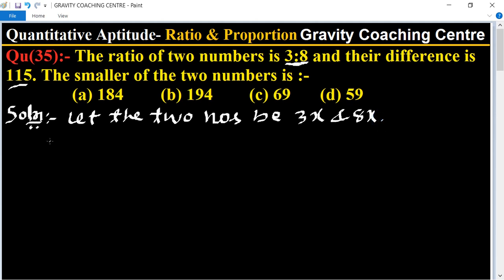And according to the question, their difference is given. Their difference: 8x minus 3x equals 115.